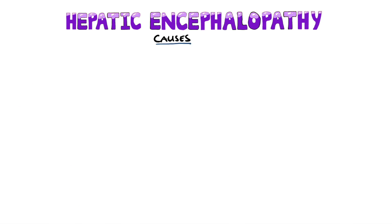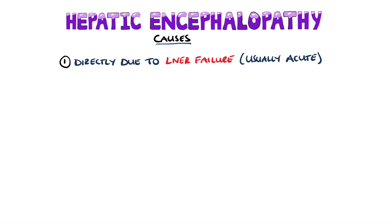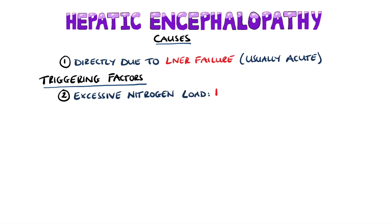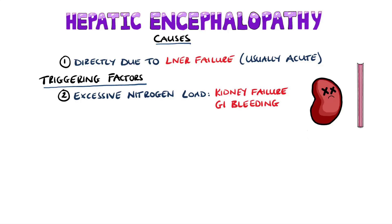Hepatic encephalopathy may occur directly from liver failure, which is more common in acute liver failure. But in chronic liver failure there is typically a triggering factor, which could be excessive nitrogen load — coming from kidney failure, where patients are unable to excrete nitrogen compounds, or GI bleeding including from esophageal varices. Excessive protein consumption was previously thought to be a cause, but has since been disproven.